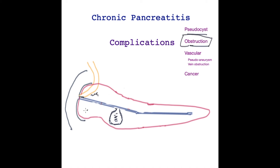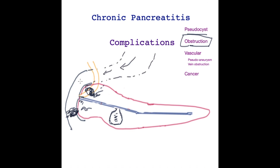Regarding obstruction: scar tissue forming within the pancreas can cause strictures to form within the bile tube, stopping the flow of bile and causing patients to become jaundiced. Inflammation within the pancreas can also have the same effect. Additionally, scar tissue may project into the small bowel causing gastric outlet obstruction, so the stomach is unable to propel food forwards.